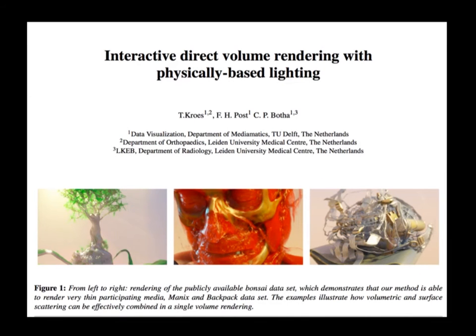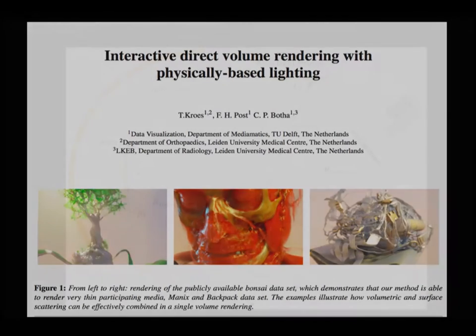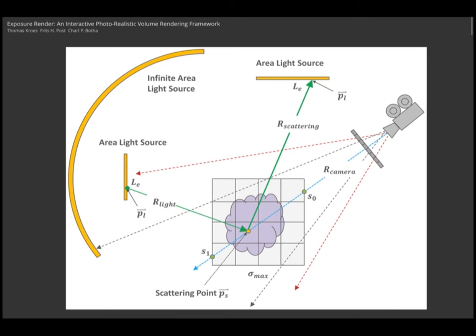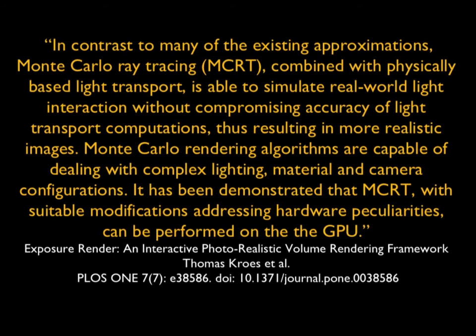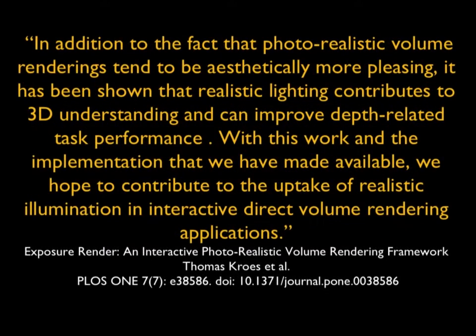Work has been done and we've spoken about this. Brett Crowe is talking about a way of using multiple lighting models to look at the data set — not just one lighting source — with the goal of doing photo-realistic volume rendering, so that we can make better quality images. The article talks about how they're able to simulate real-world light interactions without compromising the accuracy of the computations, providing more realistic images.